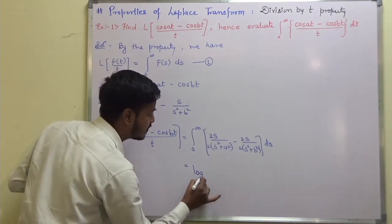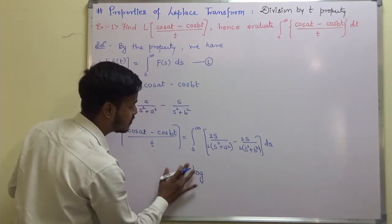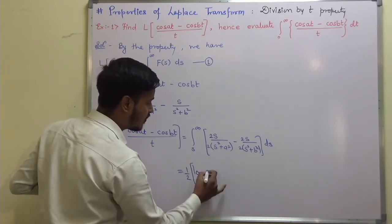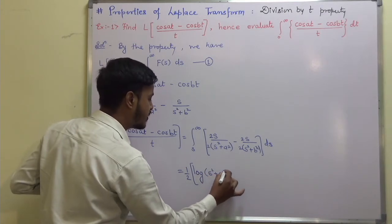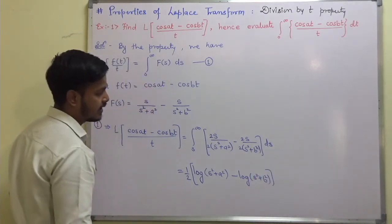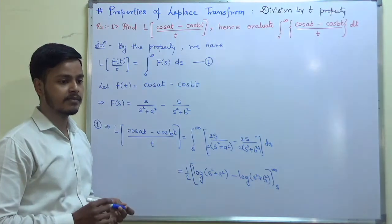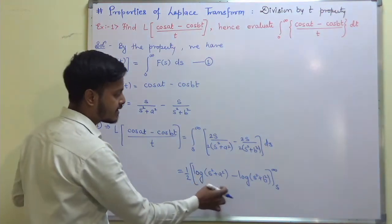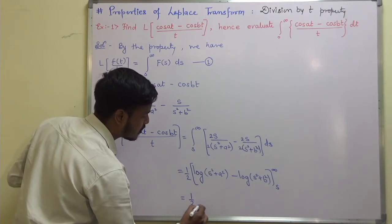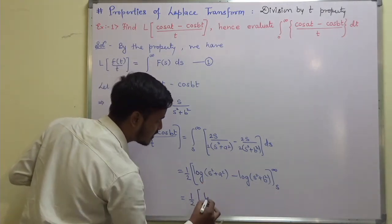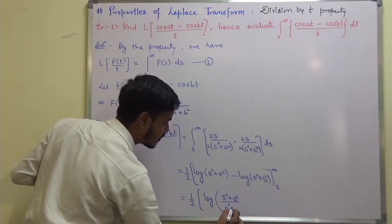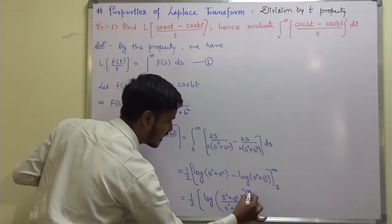Integrating using the formula ∫f'(x)/f(x) dx = log|f(x)|, and taking 1/2 outside, we get (1/2)[log(s²+a²) - log(s²+b²)] evaluated from s to infinity. Applying the logarithm law log a - log b = log(a/b), this becomes (1/2) log((s²+a²)/(s²+b²)) with the limit from s to infinity.